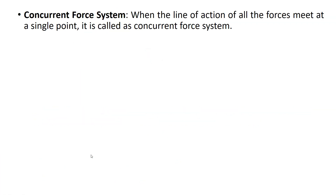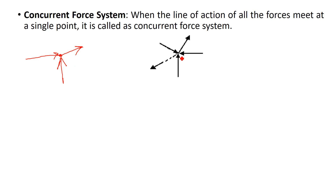Concurrent force system means when the line of action of all forces passes through a single point. If you take one point and a number of forces are acting, but all forces pass through the same point, this is called a concurrent force system. All forces are intersecting each other at one common point.